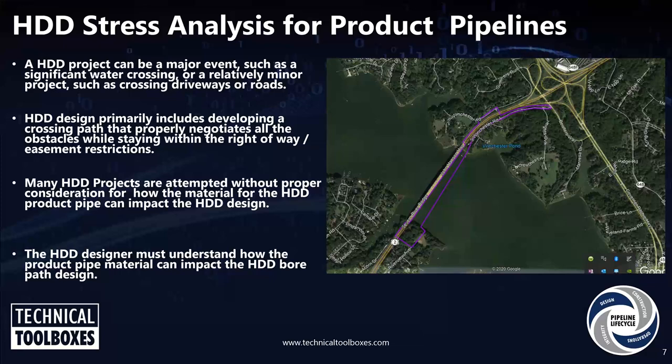Our project can be anything from a very significant event to a relatively minor crossing such as small streams and highways. When we look at designing a drill, regardless of what kind of material we're using, our design includes coming up with a crossing path that negotiates all the obstacles while staying within our right-of-way easement restrictions. A lot of times people approach their design without paying proper consideration to the kind of material they're going to use for the product pipe and how that material impacts the HDD design.